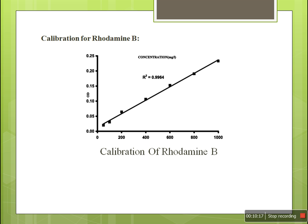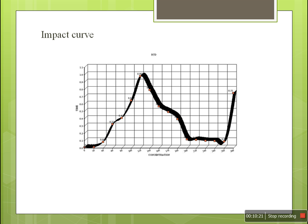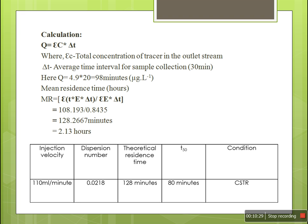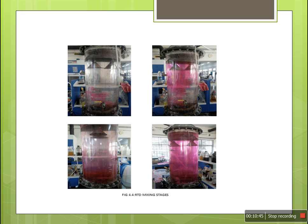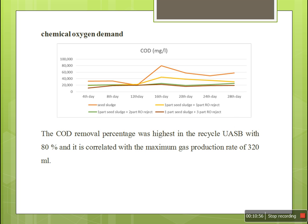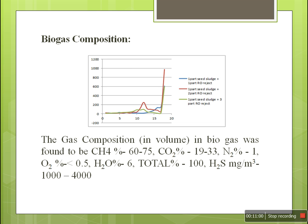Results: RTD is found to be CSTR. This is the calibration of rhodamine B and its impact curve determined by mean residence time under 110 ml per liter. 50% of mixing is found at 80 minutes and the condition is found to be CSTR. This is confirmed using the dispersion number of 0.0218, which confirms CSTR. Tests were conducted for efficient biogas production including volatile fatty acids, ammonia, alkalinity, chemical oxygen demand, and biogas production. Biogas composition: methane is found to be 60–75%, CO2 is 20–33%, nitrogen is 1%, and other gases make up the remainder.